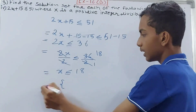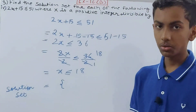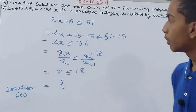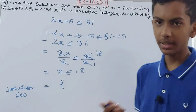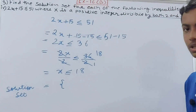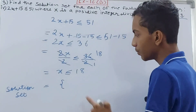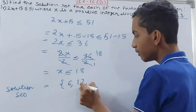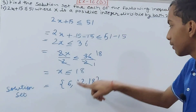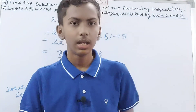For the solution set, x must be a positive integer divisible by both 2 and 3. Any number divisible by both 2 and 3 is also divisible by 6, since 6 is the LCM of 2 and 3. So we look for positive multiples of 6 that are less than or equal to 18: that gives us 6, 12, and 18. Each of these is divisible by both 2 and 3, so the solution set is {6, 12, 18}.